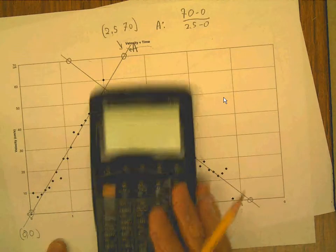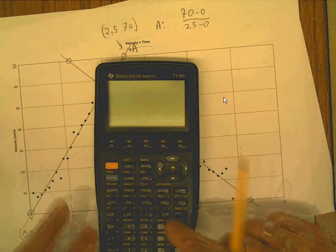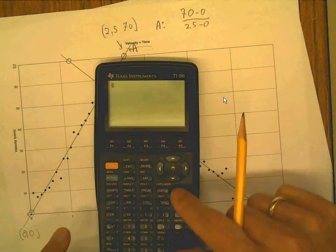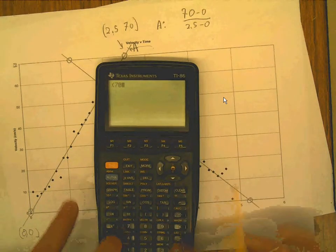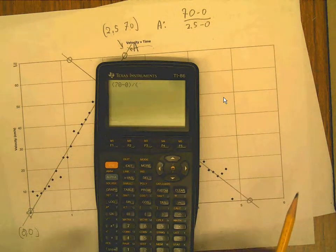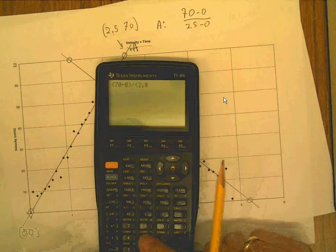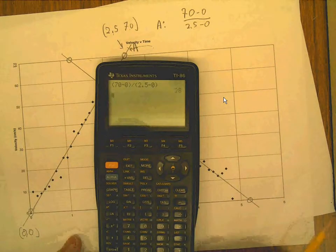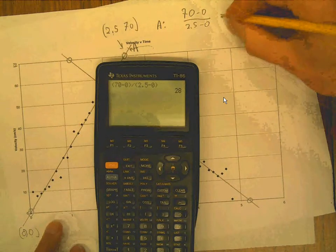And at this time of morning, I need to use my calculator to do that, right? So 70 minus zero divided by, and you got to use the parentheses on this, okay? 2.5 minus zero. Obviously, I don't need to subtract zero, but there it is. And that works out to be exactly 28.